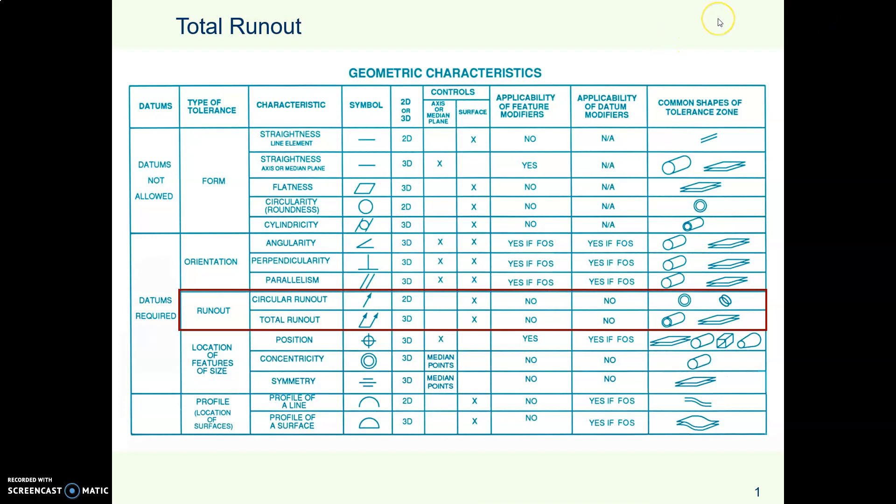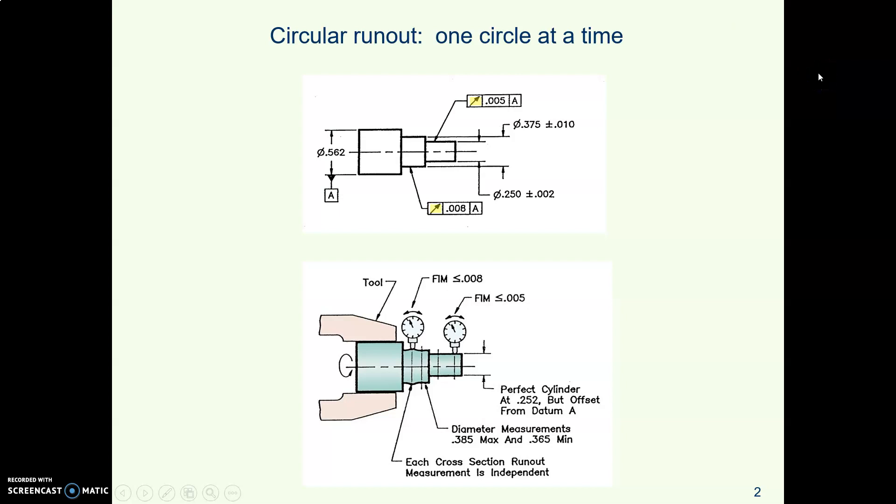We will finish up with total runout. Last time we looked at circular runout with the single arrow in our feature control frame for rotating parts where the indicator is just planted in one spot and records the needle movement, then it's moved to another spot. That's circular runout.